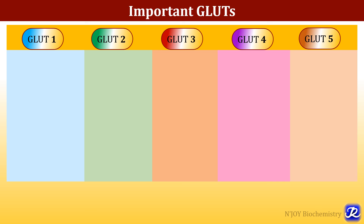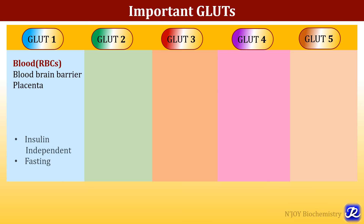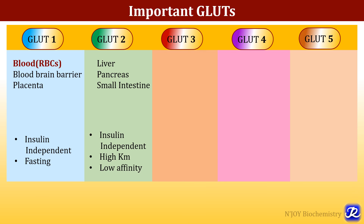To revise: GLUT 1 is located in red blood cells, blood-brain barrier, and placenta. It is insulin independent and responsible for glucose uptake during fasting. GLUT 2 is located in the liver, beta cells of pancreas, and small intestine. It is insulin independent with high KM and low affinity. When blood glucose rises, GLUT 2 mediates glucose uptake in liver — leading to glycogen formation — and in beta cells of pancreas — leading to insulin secretion.